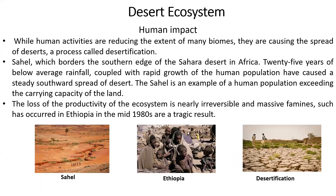What is the human impact? Human activity on the desert is increasing, leading to a process called desertification — where the desert expands into other areas. This is happening in Africa, where whole deserts are spreading southward. Over 25 years, as average rainfall declined and the human population grew, forest cover was lost and the desert started growing quickly.